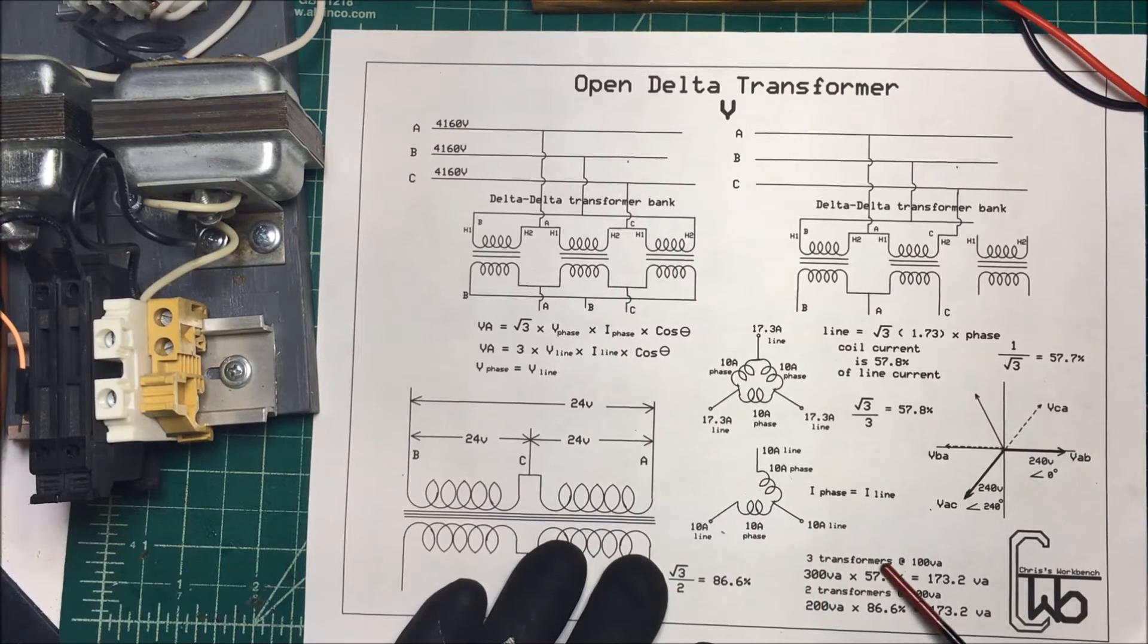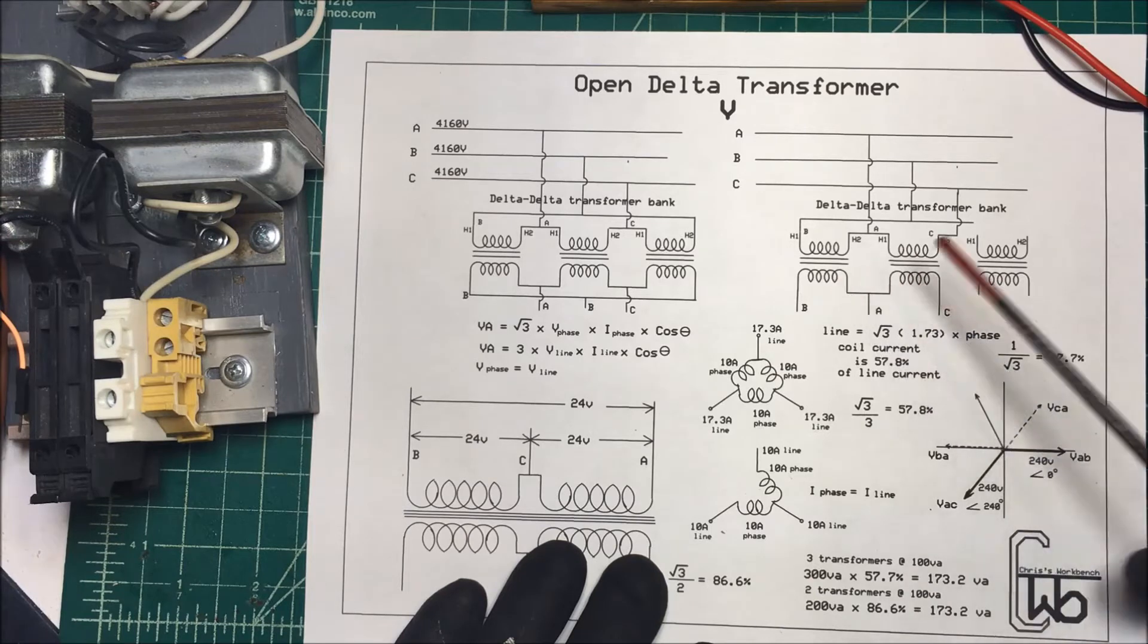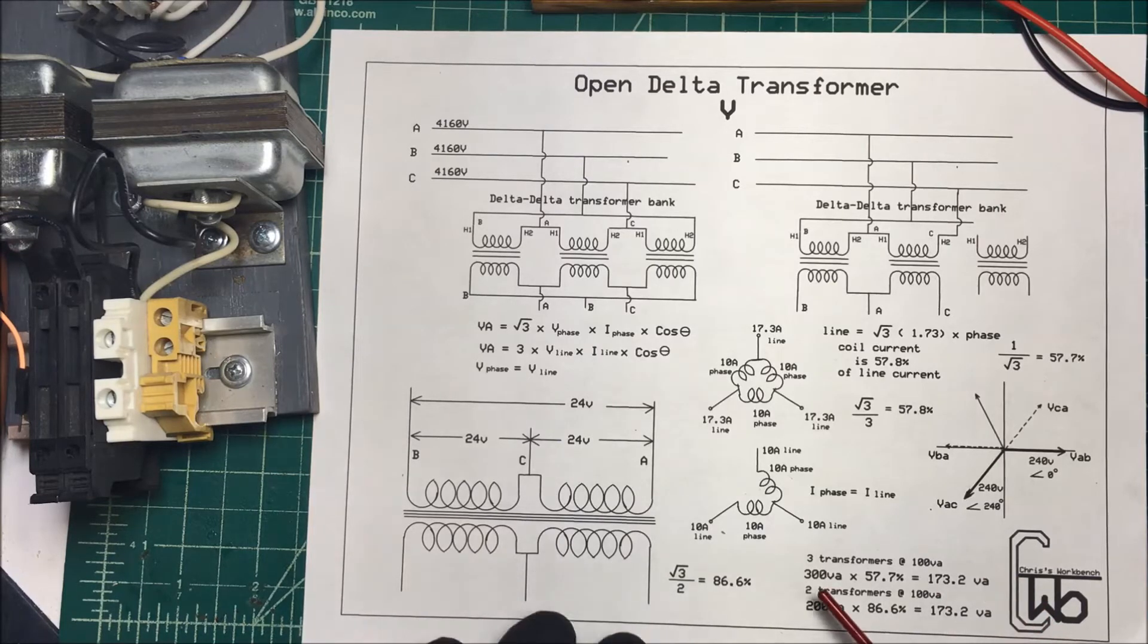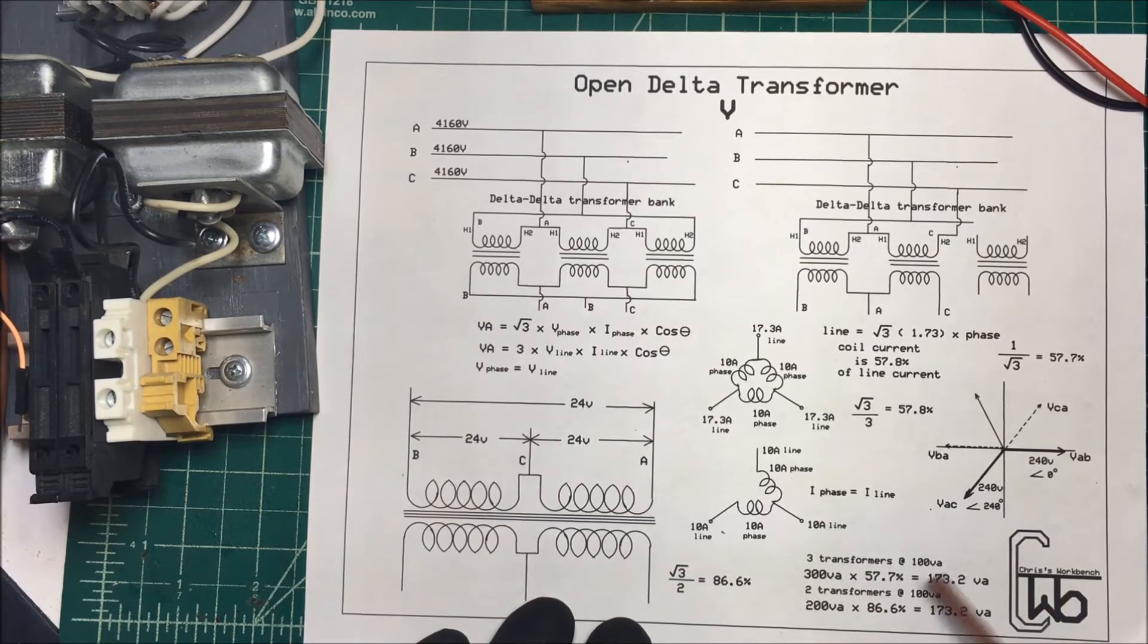So if you have a three phase transformer, say where they're all at 100 VA each, that's 300 VA times 57.7%. So our wattage is going to be 173.2 VA on that one. Or if you can do it a different way, if you have two transformers at 100 VA,